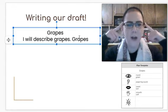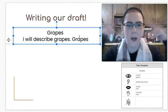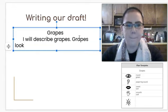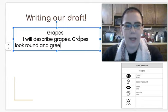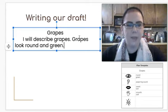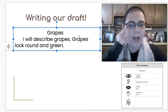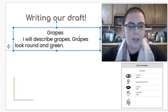So we know that grapes, and we use our eyes, we're going to say the word look. And we said they looked round and green. And then a period because that's the end of my thought, it's the end of my sentence. Grapes look, my sense is my eyes, round and green.